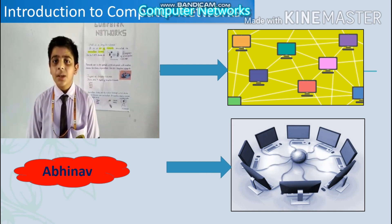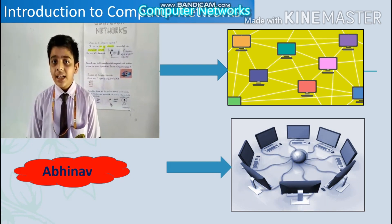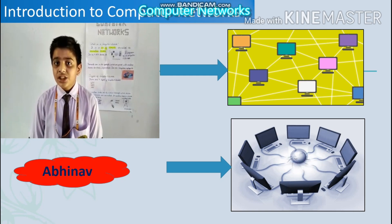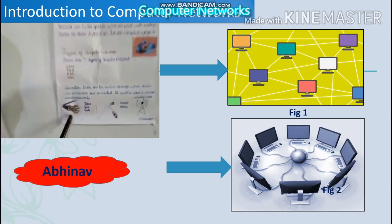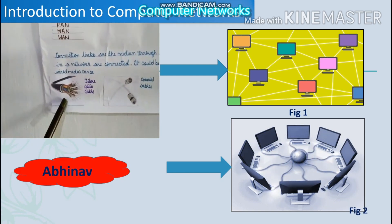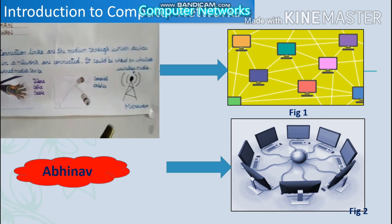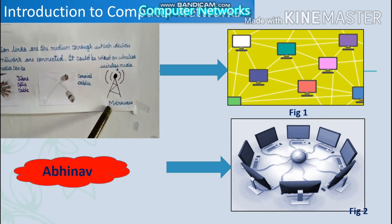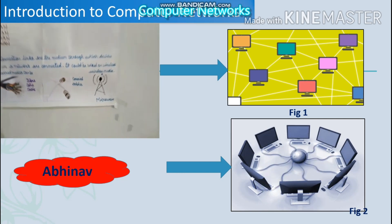Now let us move to some connection links. Connection links could be wired media such as fiber optic cable, coaxial cables, etc., and wireless media includes microwave, radio wave, etc.